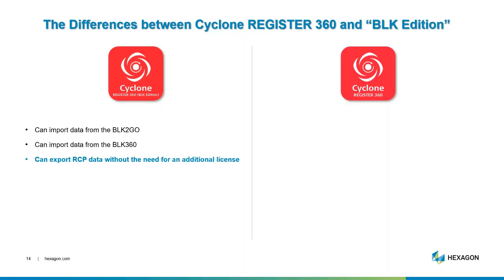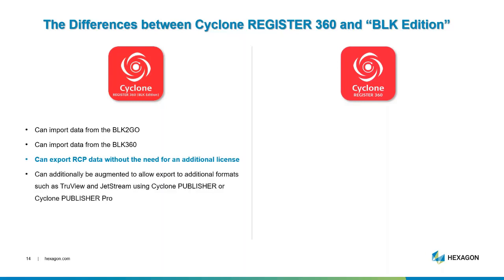You can export RCP data without the need for an additional license from the BLK Edition. You can also augment Cyclone Register 360 BLK Edition with other licenses to publish TrueView or Jetstream data, using the new Cyclone Publisher or Publisher Pro licenses.